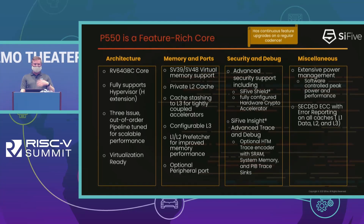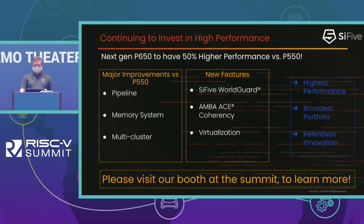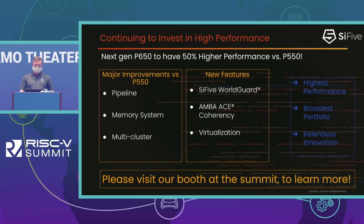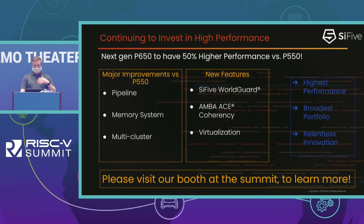The follow-on to P550 is P650, which is expected to have about 50 percent higher performance than P550 through major improvements in the pipeline by making it wider, with better branch prediction, a more aggressive memory system and hardware prefetching. There's also improved support for larger core counts through multi-cluster implementations. Other features being added include Sci-5 WorldGuard, which is similar to but we think better than Arm TrustZone in some ways, support for connecting to AMBA ACE fabrics, and hardware virtualization.